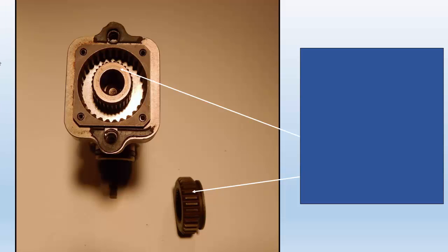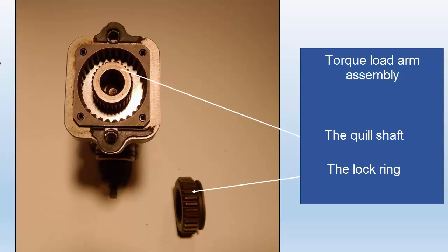On the left is a picture of the torque load arm assembly with the cover removed. Here is the quill shaft, and this is the lock ring that positions and locks the quill shaft in a preloaded or torqued condition.